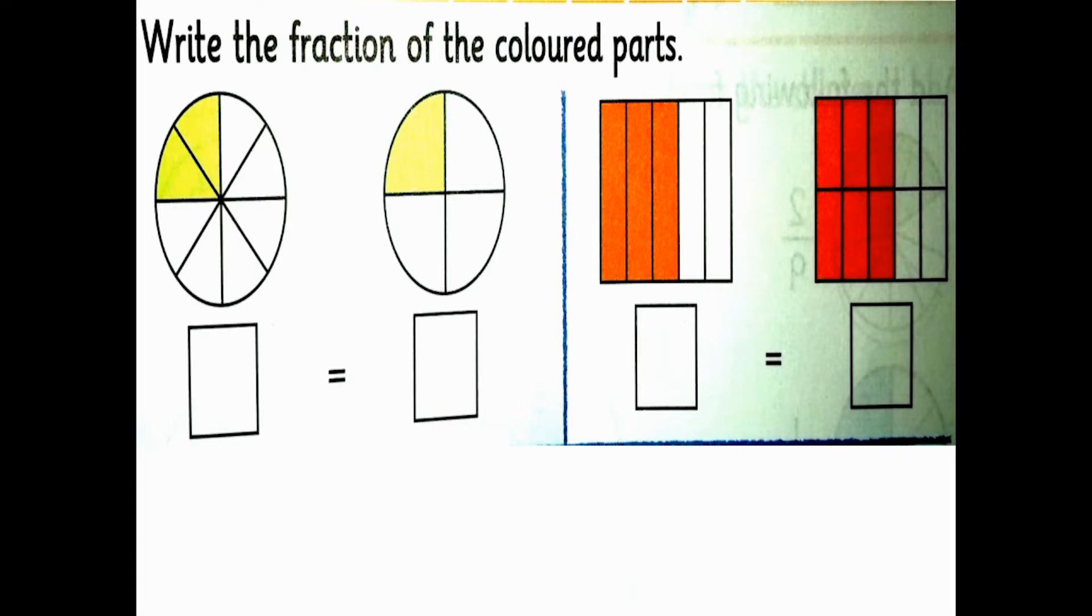We have colored parts in fractions. In the first picture, we have total how many parts? 8 parts, and 2 are colored. In the second part, we have 1 colored, and the total parts are 4.